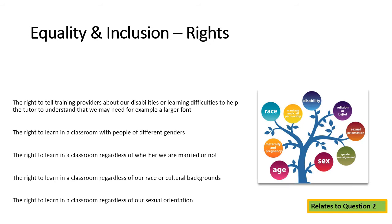The next two slides look at rights regarding equality and inclusion. Everybody has the right to tell training providers about their disabilities or learning difficulties — for example, needing larger fonts. It's about having the right to be involved and adapting things to help people participate. Everyone has a right to learn in a classroom with people of different genders, regardless of marital status, race, cultural background, or sexual orientation.